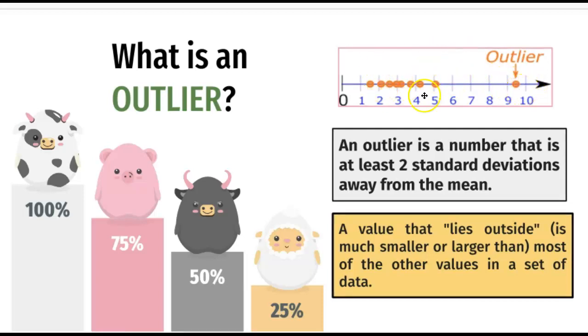This is the outlier. This is the group of numbers that you have, but you have one that is a little bit far away from the group. So an outlier is a number that is at least two standard deviations away from the mean, or you could also say that the value that lies outside, meaning it's much smaller or larger than everything else in the data.